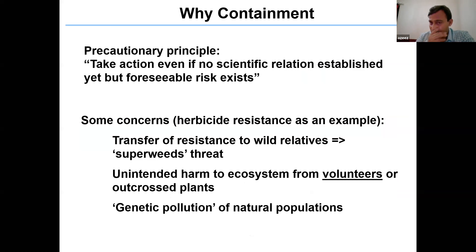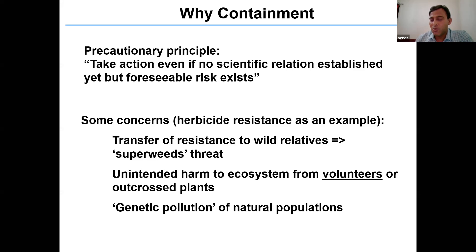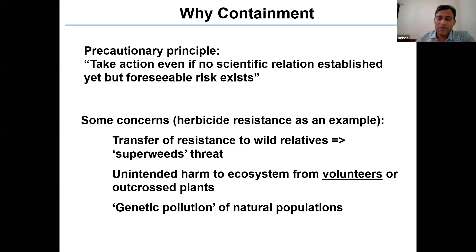I will talk about what containment is and why it's important. As responsible scientists, we should take action even if there is no solid evidence that these genes will transfer into the natural system. Based on some evidence, people have shown that when working on resistance varieties of weeds, there is a concern that these genes may get transferred into natural weeds and take over agricultural crops — what is called superweeds. That is one of the major concerns in agricultural fields.